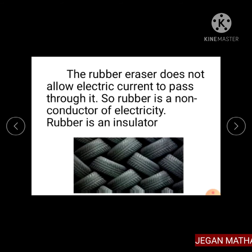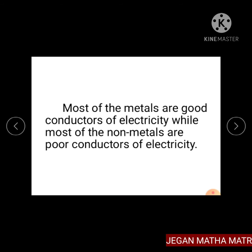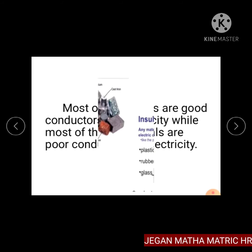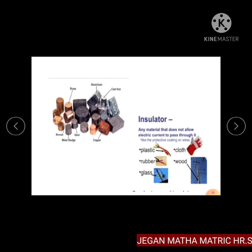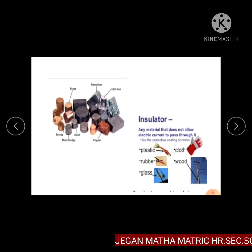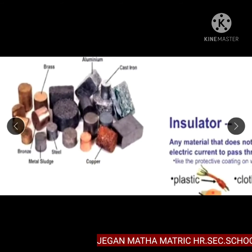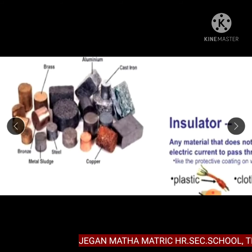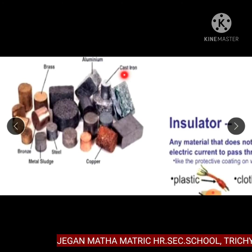The rubber eraser does not allow electric current to pass through it. So rubber is a non-conductor of electricity — that is, rubber is an insulator. Most of the metals are good conductors of electricity, while most of the non-metals are poor conductors of electricity. In this figure, some metals are given which act as good conductors.